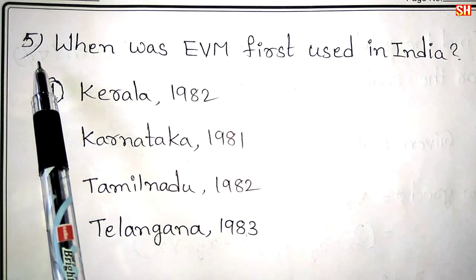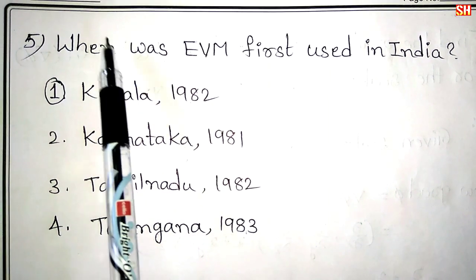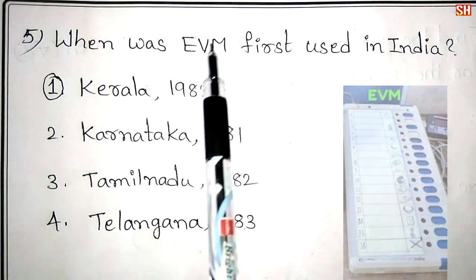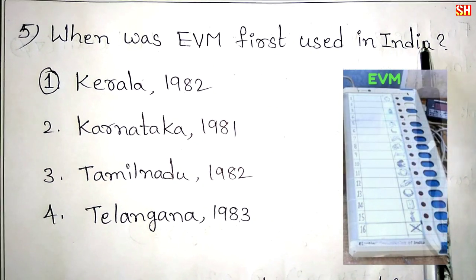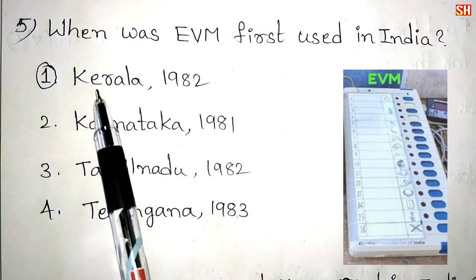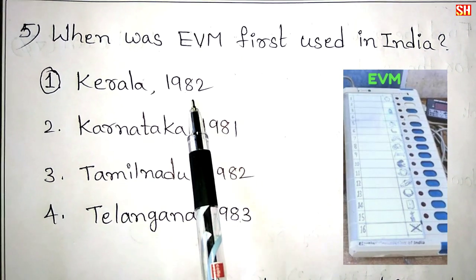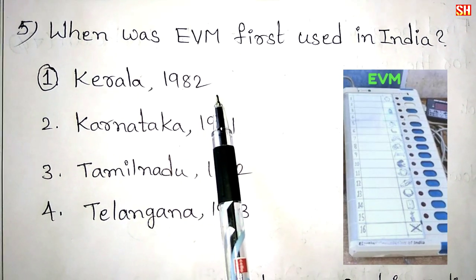Fifth question: When was EVM first used in India? Answer: Kerala, 1982.